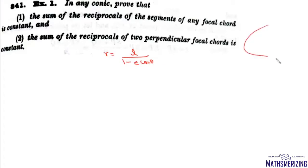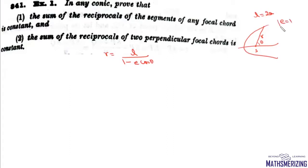The polar equation of any general conic is given by R equals L upon 1 minus E·cosθ, where R is the focal radius — the distance from the focus — and θ is the angle it makes with the axis. Here L is the semi-latus rectum, which in the case of a parabola is 2A, and the eccentricity in the case of a parabola is simply 1.